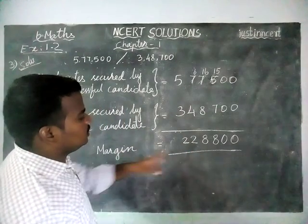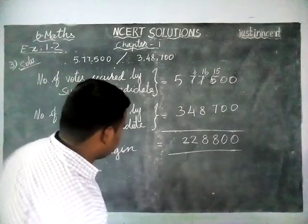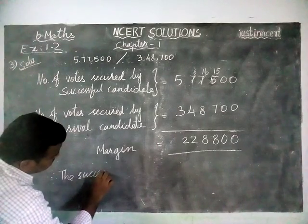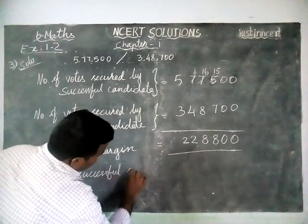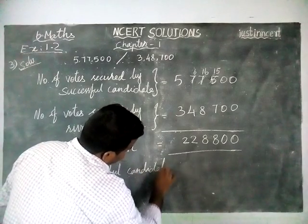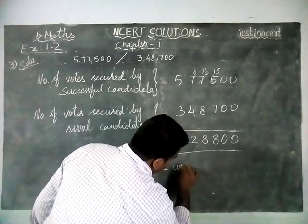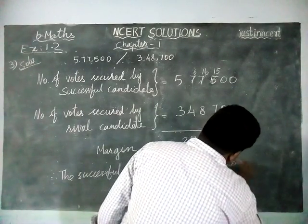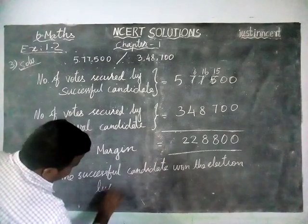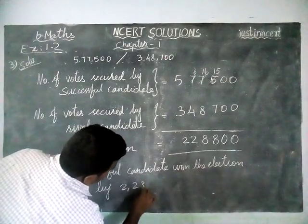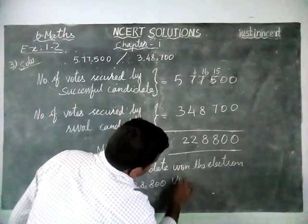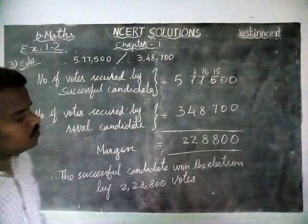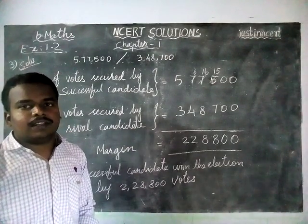So, the margin is 2,28,800 votes. Therefore, the successful candidate won the election by 2,28,800 votes. Thank you, students. Kindly share and subscribe with your friends. Thank you.